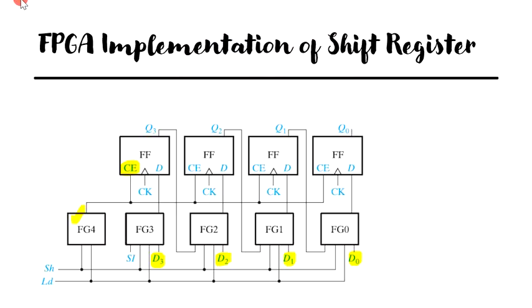However, if we set CE to be equal to LD plus SH, then we can say CE is equal to 0 when LD equal to SH, which is equal to 0 and the flip-flops will hold their current values. Therefore, we need not use the first term in the equations of the shift register. And the flip-flop D input equations will fit into the four variable function generators.